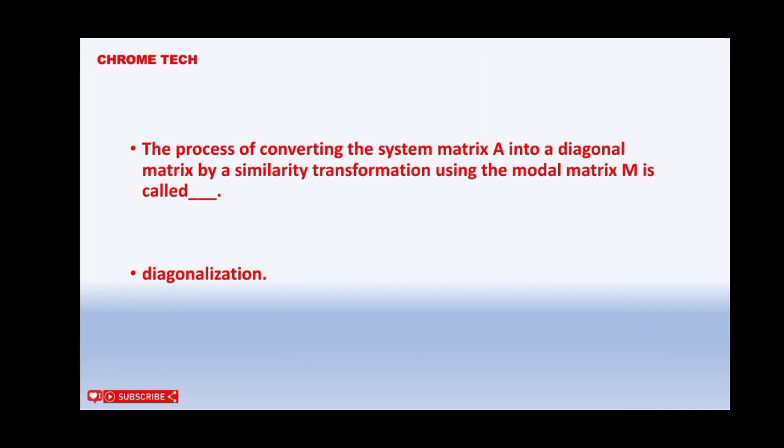Next question. The process of converting the system matrix A into a diagonal matrix by a similarity transformation using the model matrix M is called. Diagonalization is the correct answer.